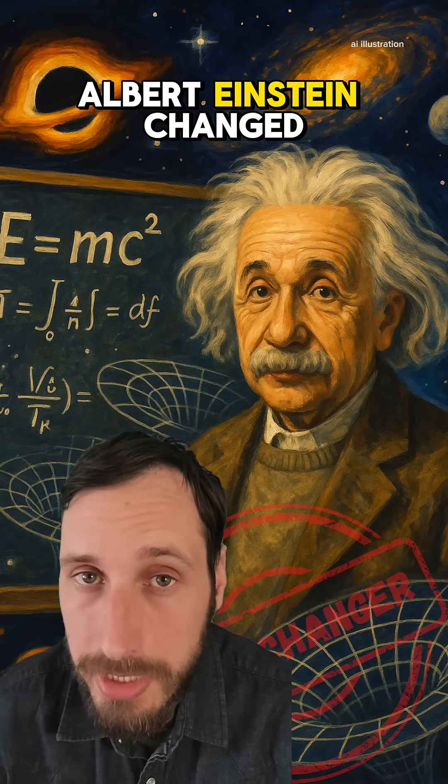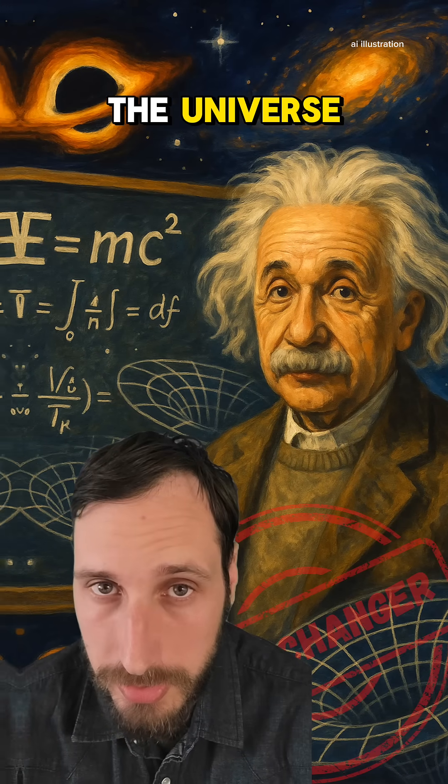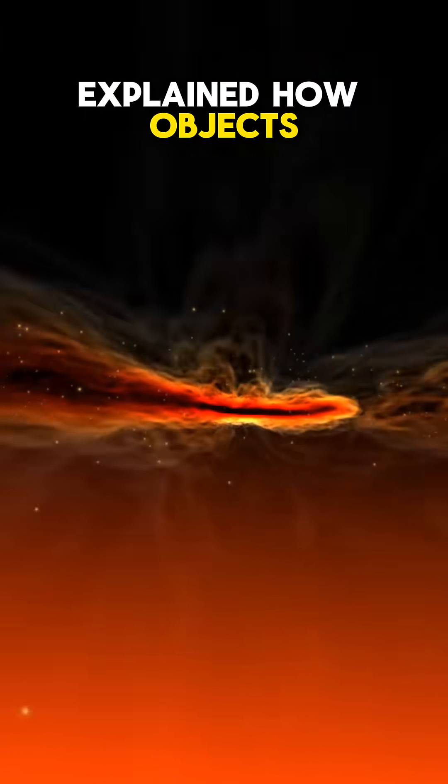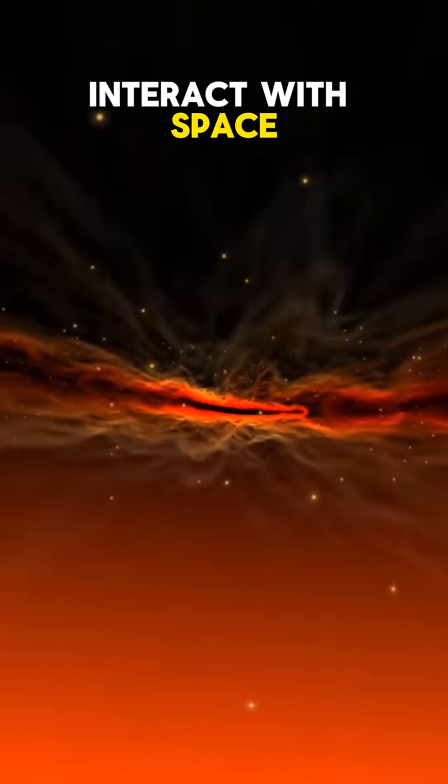In the early 20th century, Albert Einstein changed our perception of the universe. By introducing the concept of special relativity in 1905, he explained how objects traveling at high speed interact with space and time.